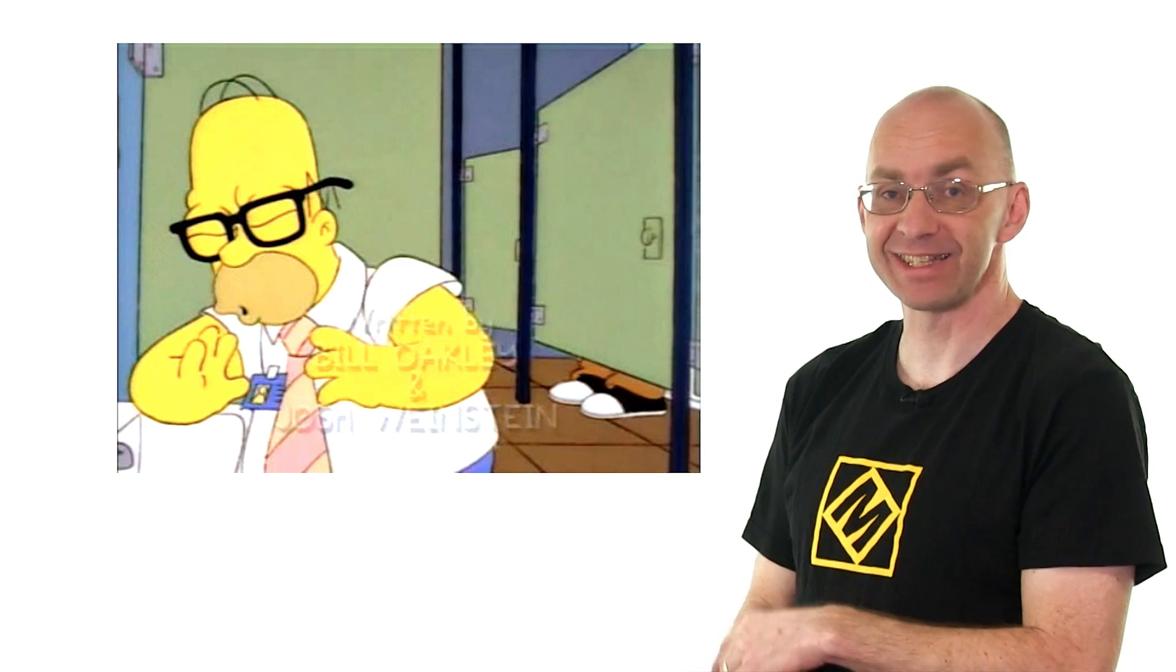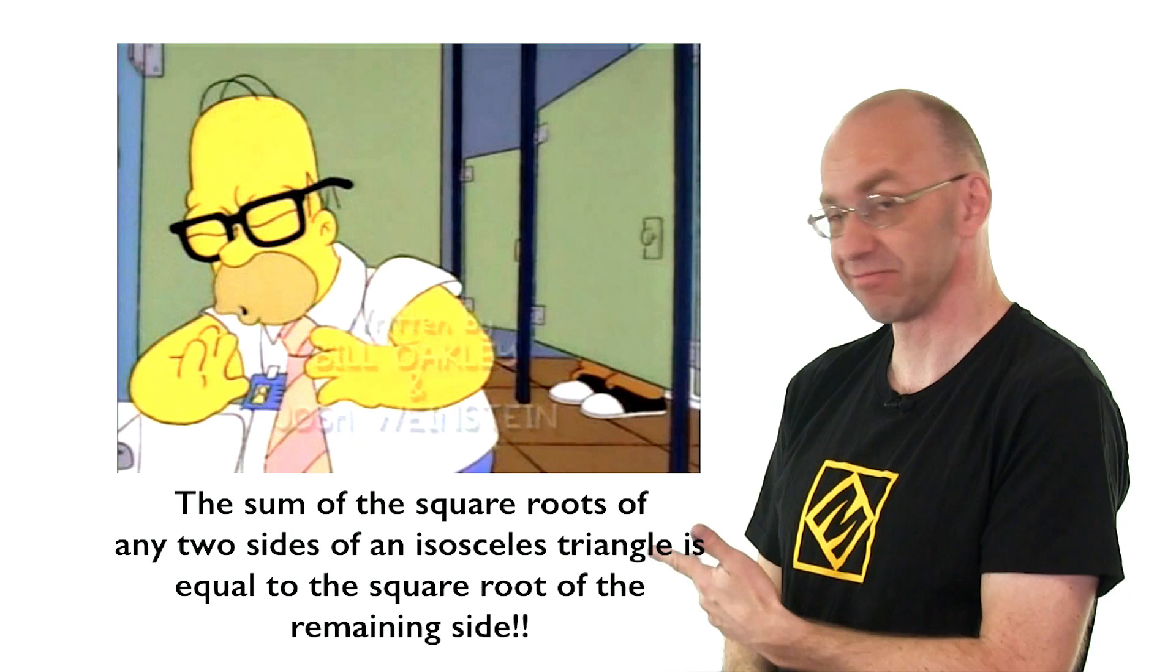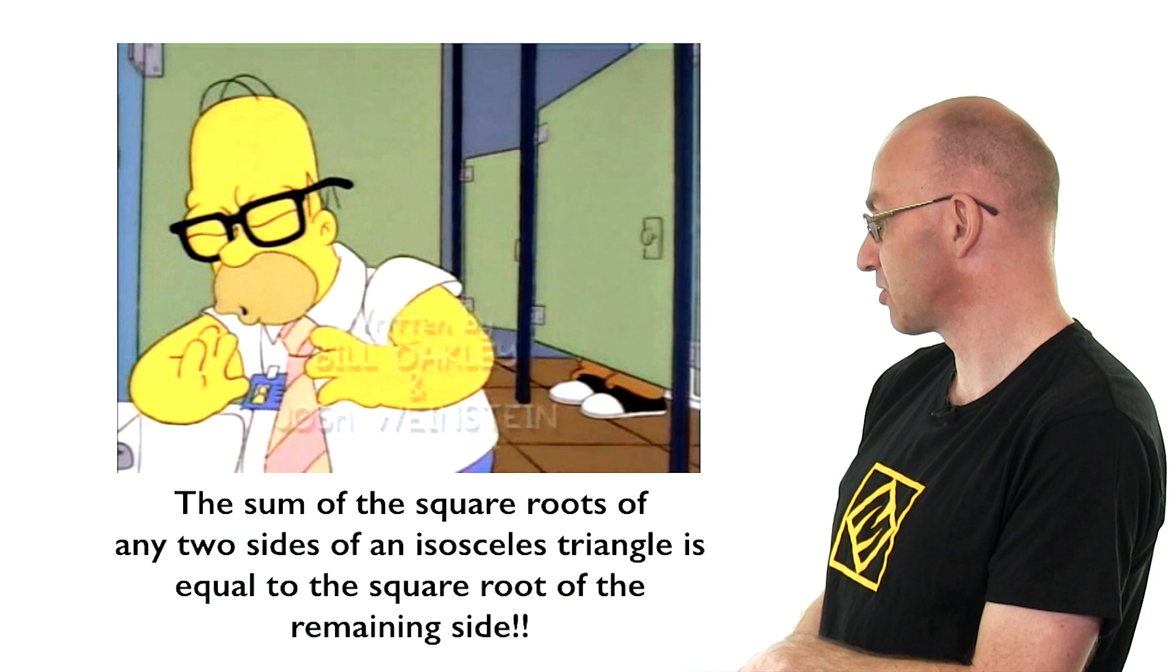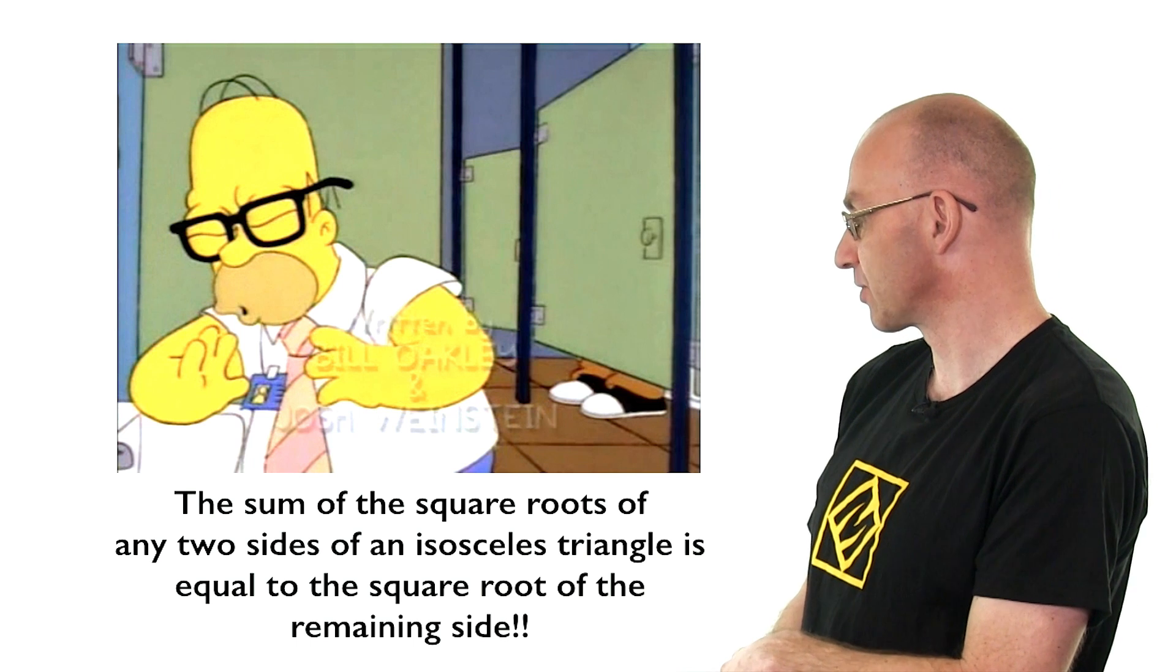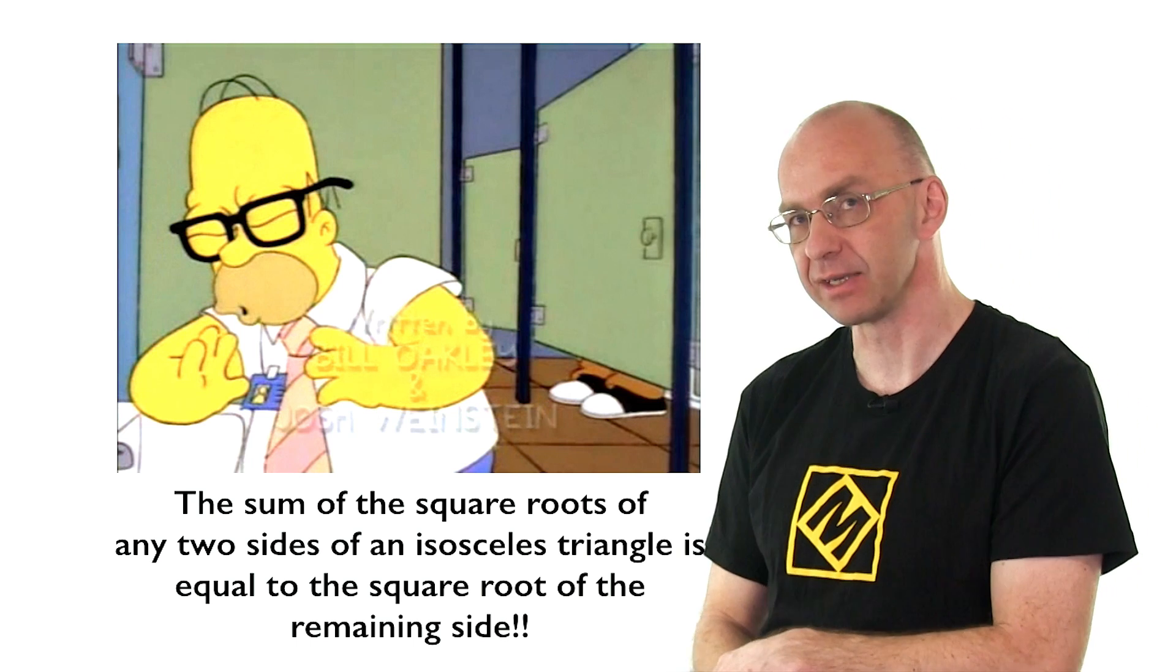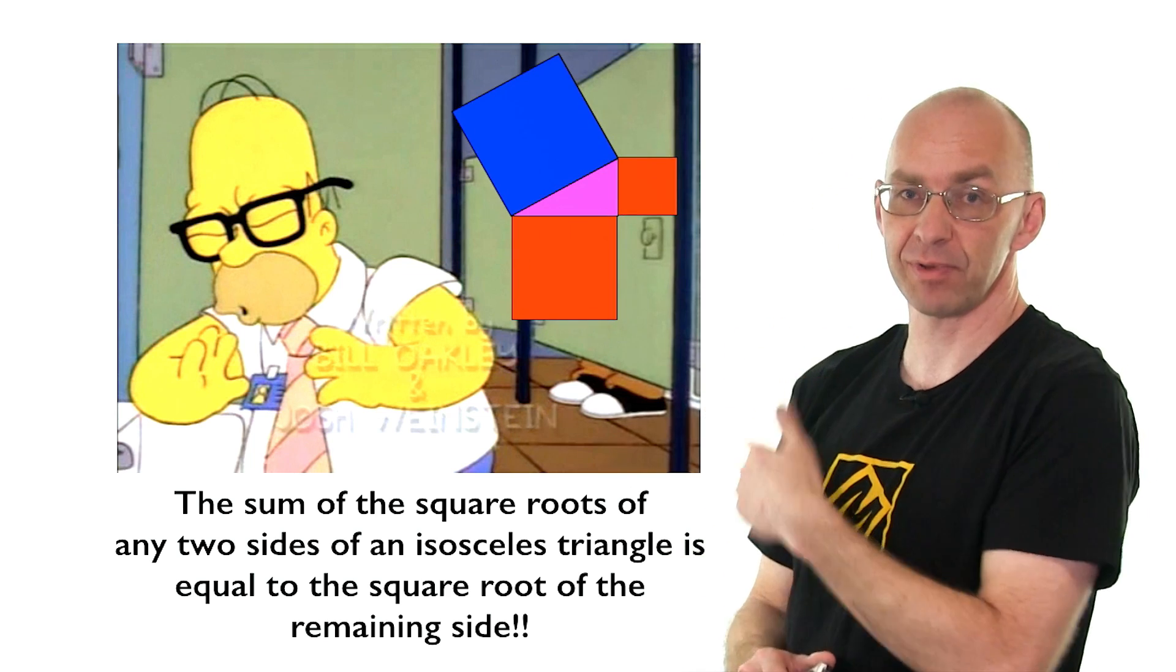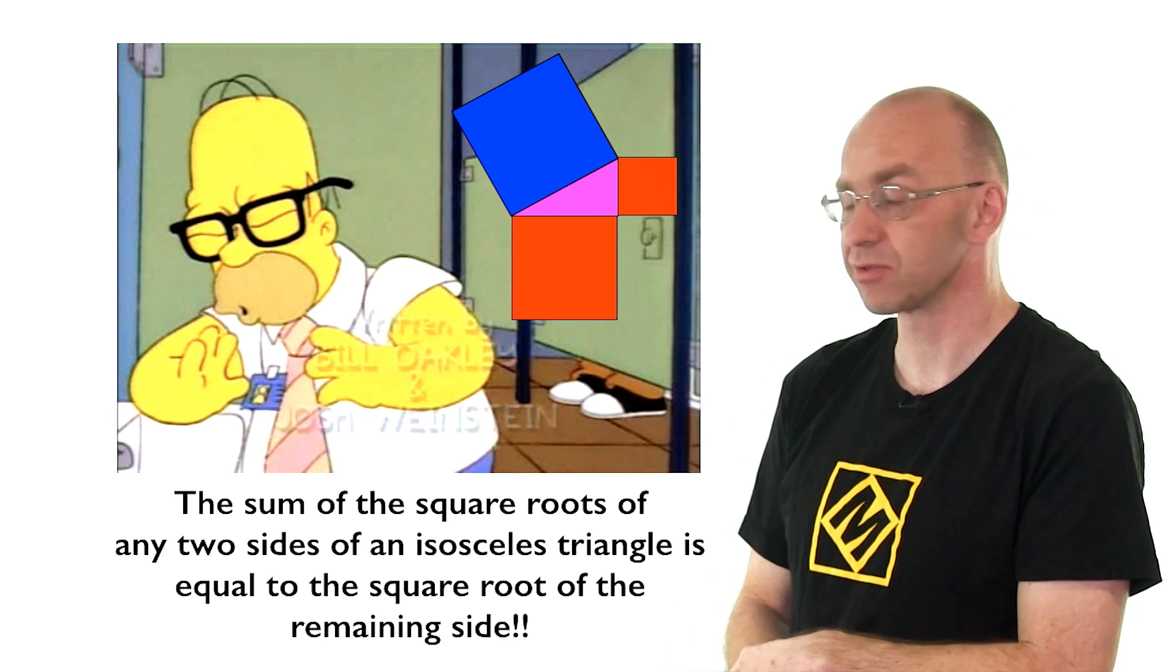So what does it say? The sum of the square roots of any two sides of an isosceles triangle is equal to the square root of the remaining side. Which sounds very similar to this guy, right? Pythagoras: a squared plus b squared equals c squared.